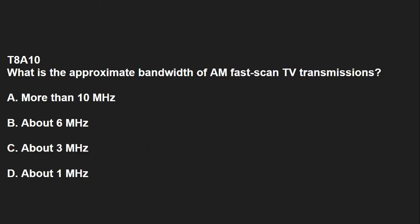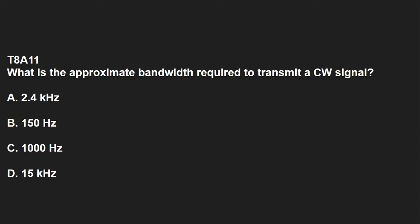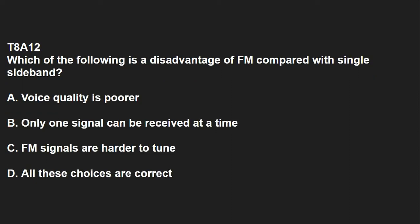T8A10: What is the approximate bandwidth of AM fast scan TV transmissions? That answer is going to be B, about 6 megahertz. T8A11: What is the approximate bandwidth required to transmit a CW signal? 150 hertz. T8A12: Which of the following is a disadvantage of FM compared with single sideband? The answer is B, only one signal can be received at a time.